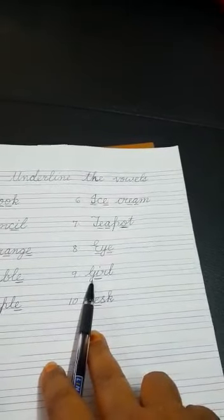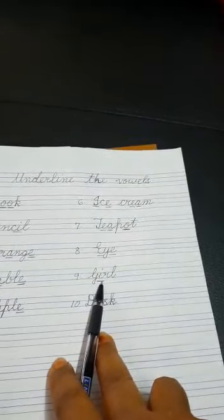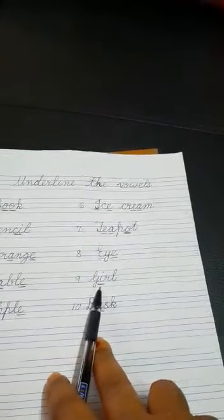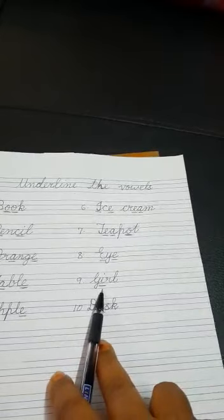Now next is girl. G, I, R, L. Girl. So I is vowel over here. We will underline I.